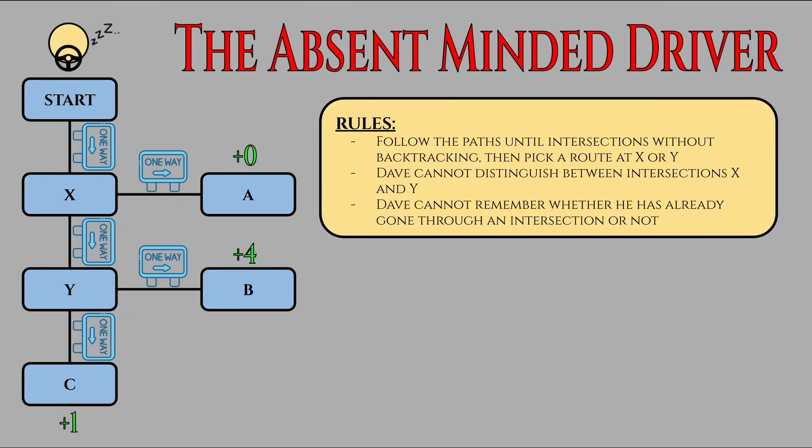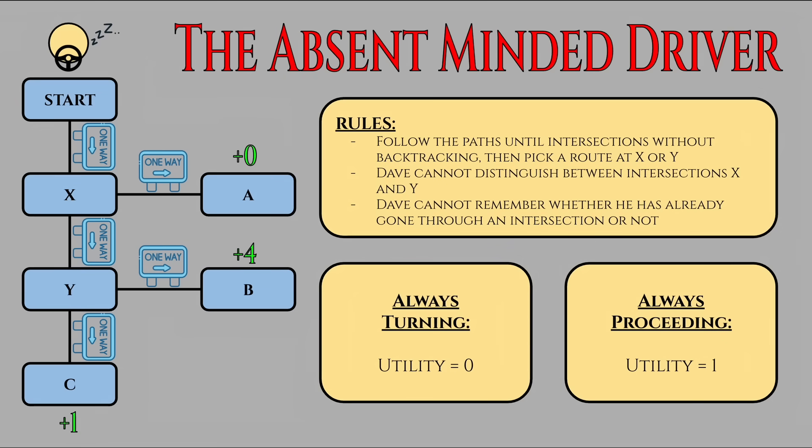From a naive perspective, Dave should obviously never exit 100% of the time at an intersection, since he's guaranteed to always drive off a cliff in that scenario. However, if he goes straight through, he'll never get home and will never reap the benefits of that sweet plus four utility at the end of B. So logically, the optimal move should be some probability in between.